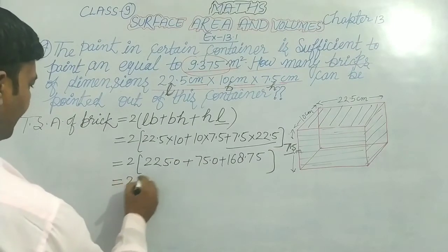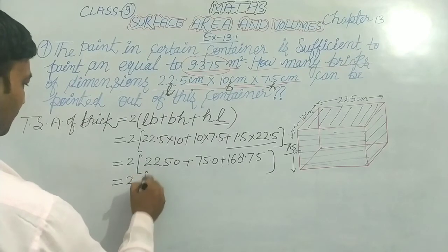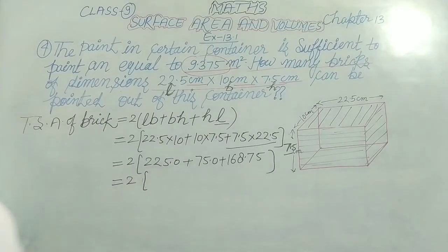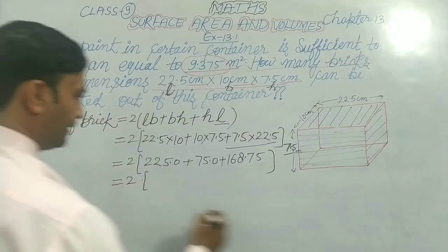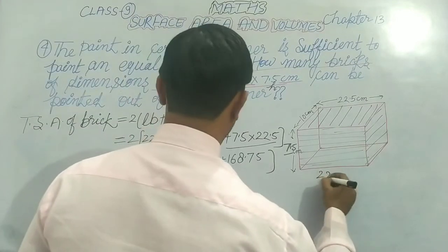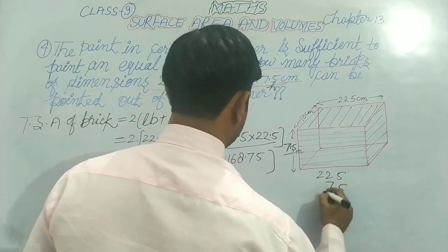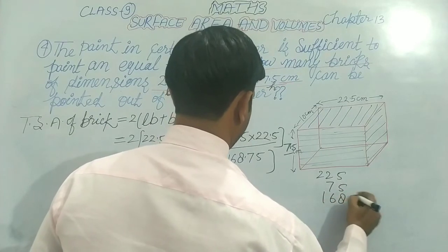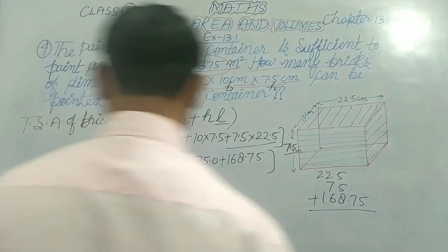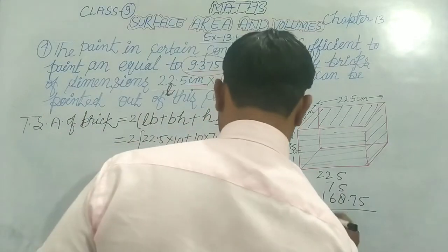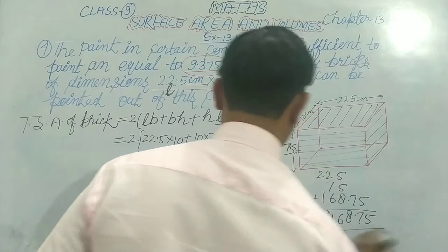We have to add these values. So we are adding: 75, 168.75. We have to add this and get the result. Adding them up we get 468.75.